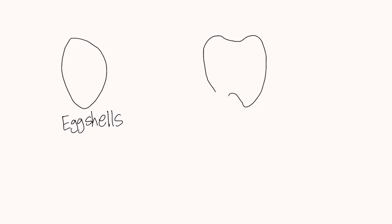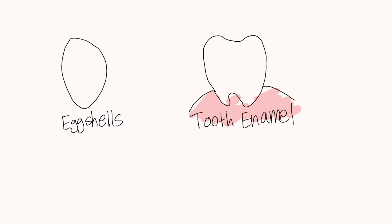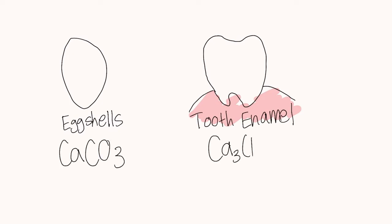What's happening here? Well, eggshells have similar chemicals to those that make up our tooth enamel — that is the outer layer of our teeth. Both contain calcium compounds: calcium carbonate for the eggs, and calcium phosphate for the enamel. They slightly differ in their polyatomic ion groups. Polyatomic ions basically means it contains more than one atom.